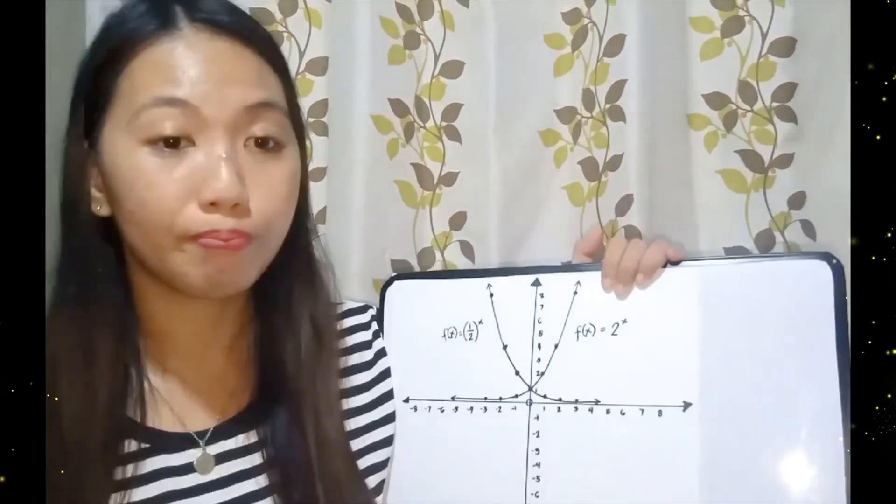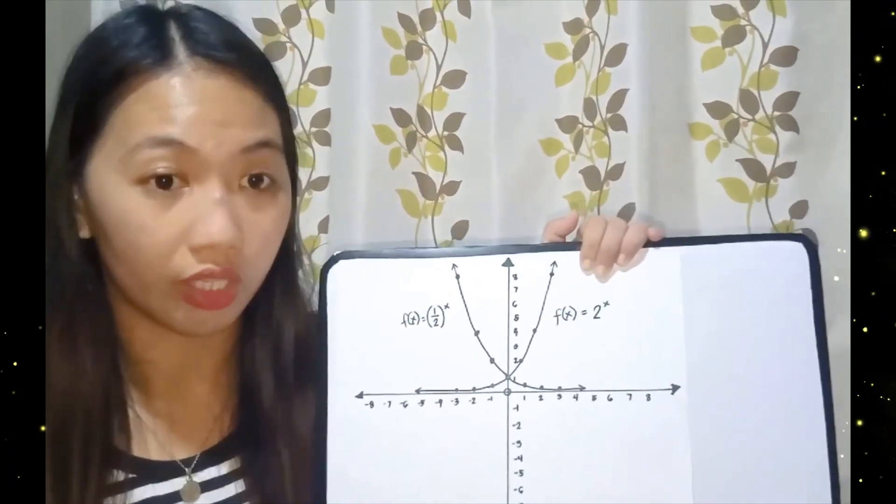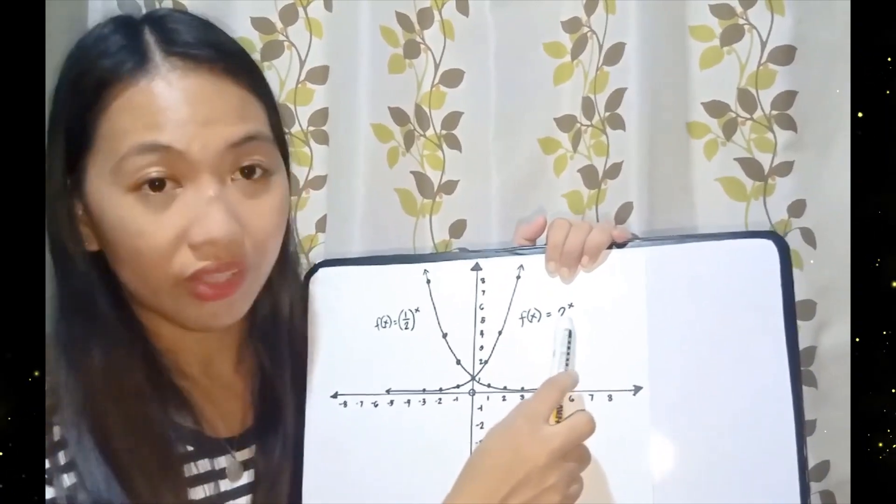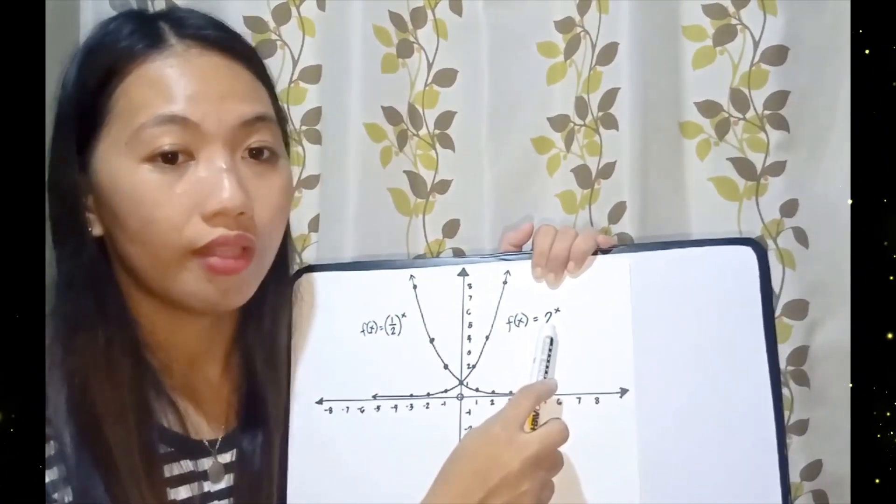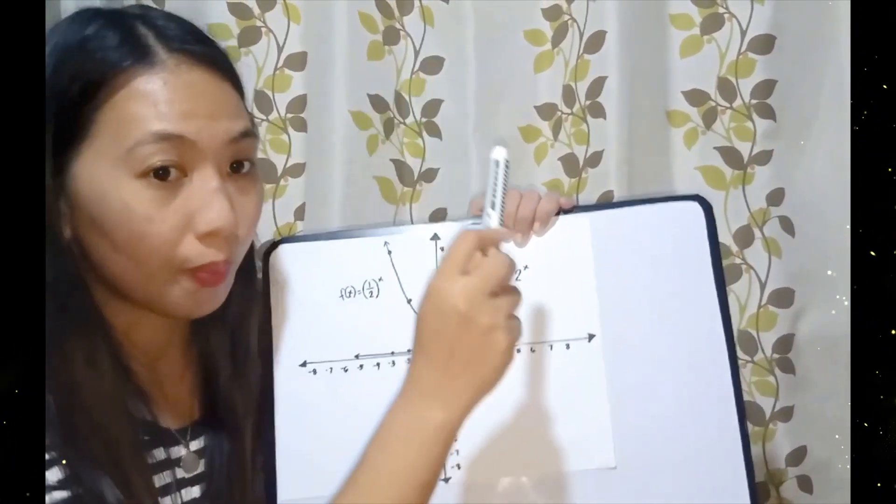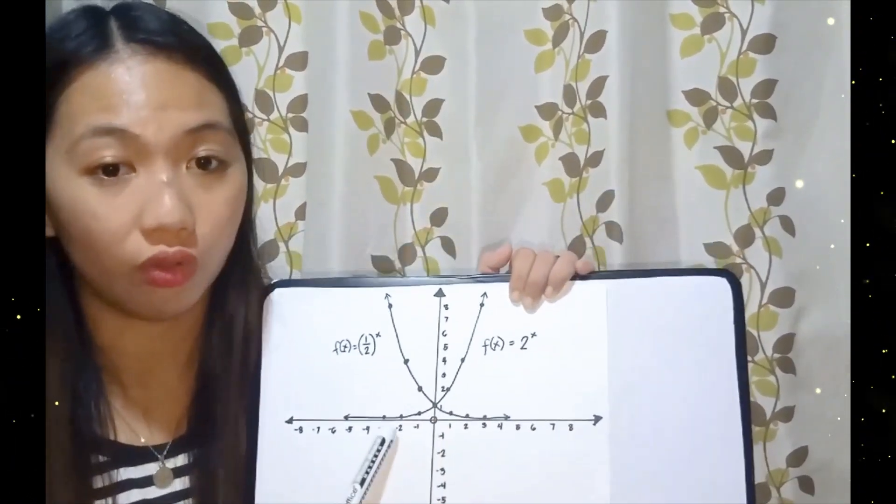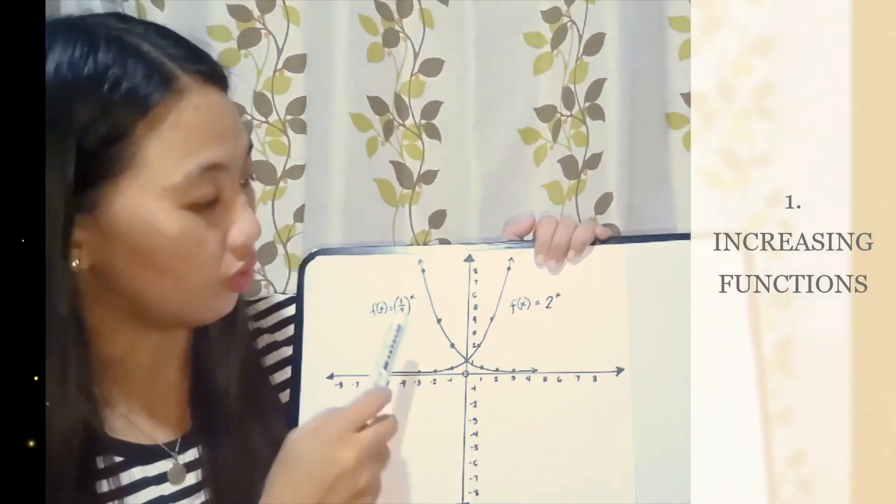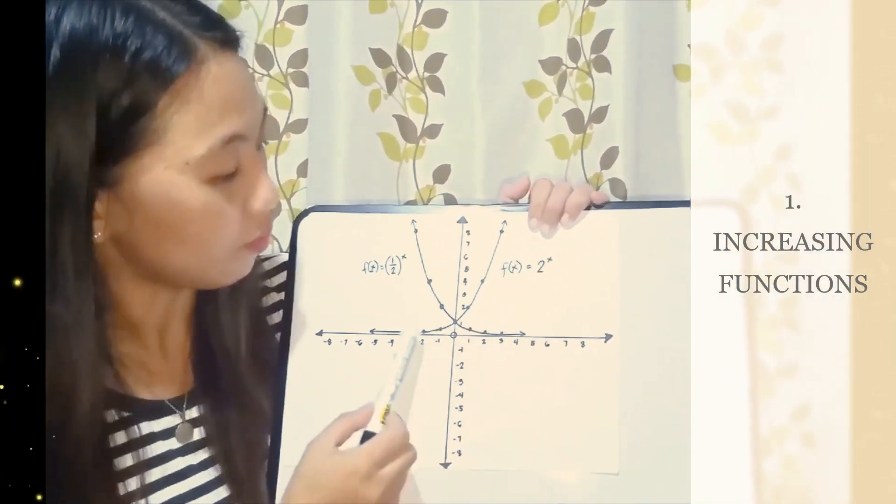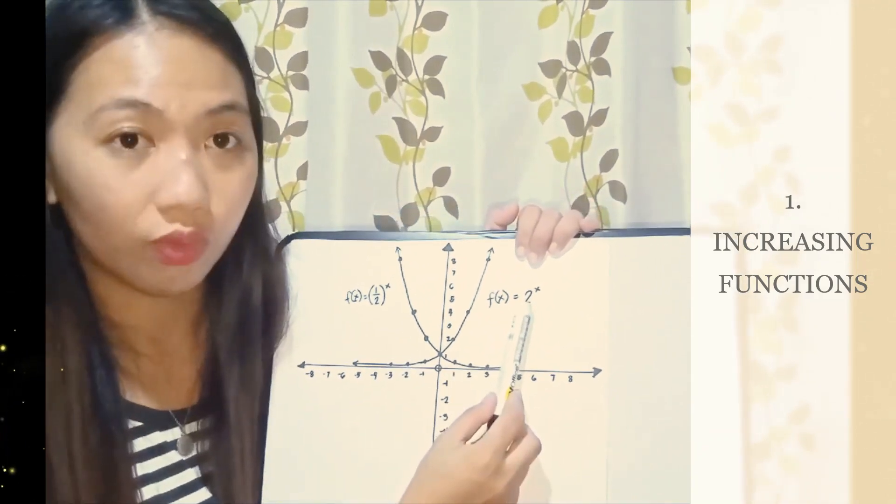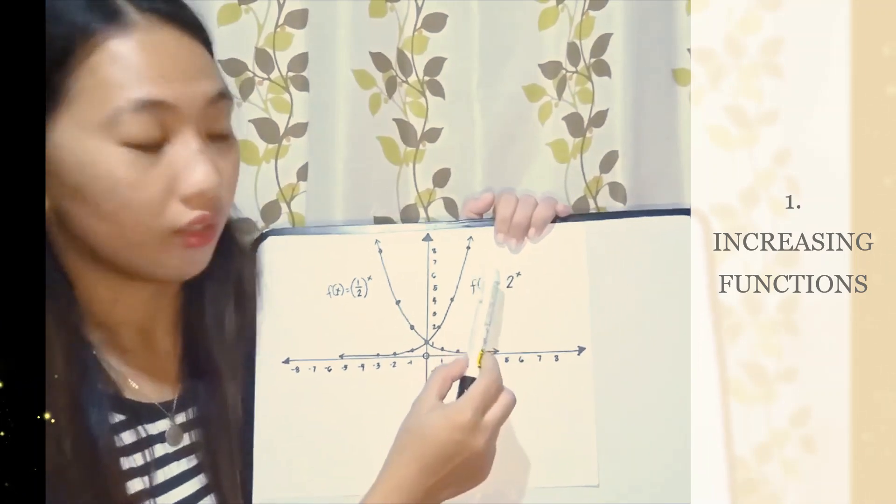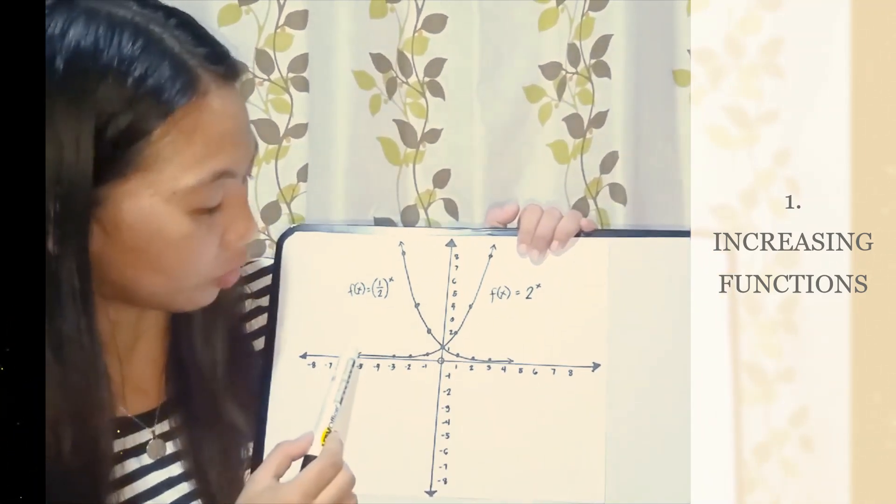First, if B is greater than 1, the value of the base is greater than 1, then the graph of the exponential function goes up and the function is called an increasing function. Like the first example I gave you, B is greater than 1 since the value of B is 2 and it goes up to the right. So, increasing function.